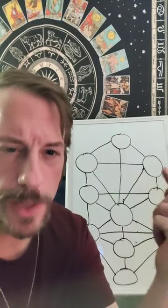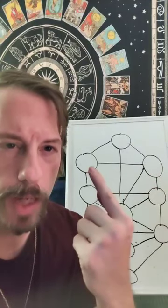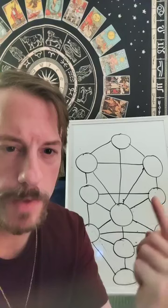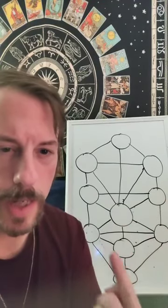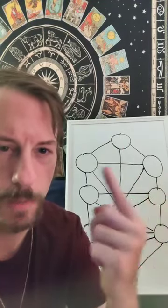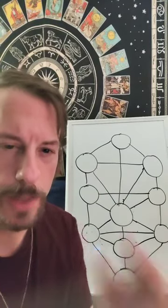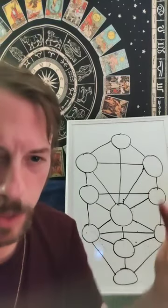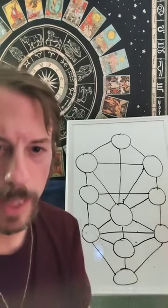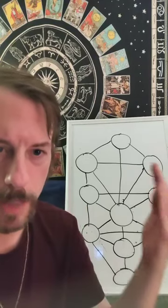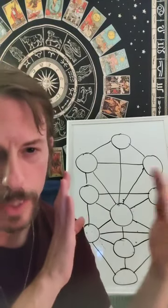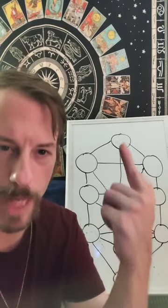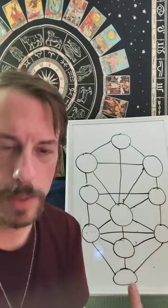The Kabbalistic Tree of Life is composed of various triads. This is often called the ethical triad. This is called the triad of nature. Up here you have the supernal triad. You have various pillars — this is called the pillar of force, and this is called the pillar of form. So you have force, or energy, and form. And then this is the middle pillar, which is really the path of return.